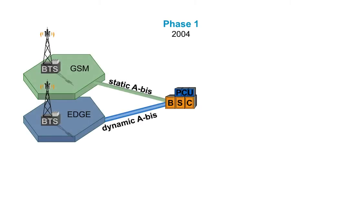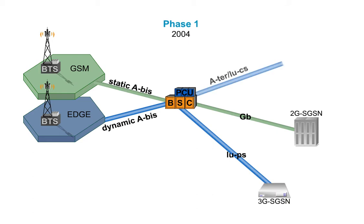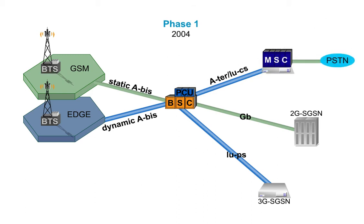BSC will then support LUPS and GP interface to work with 2G and 3G SGSNs, and LUCS to transport CS services, for example speech, to the MSC-Lite gateway towards legacy PSTNs.